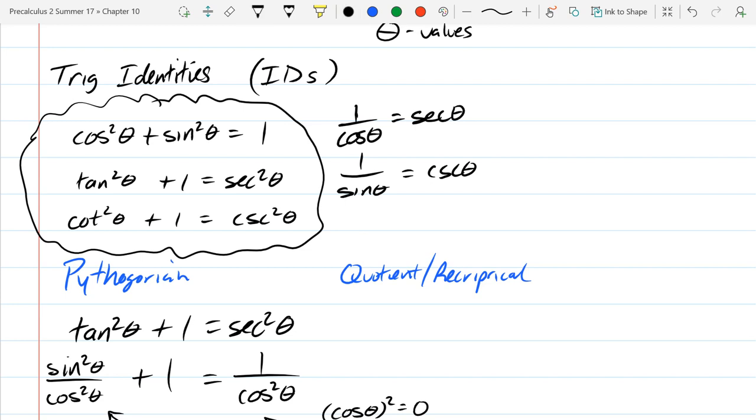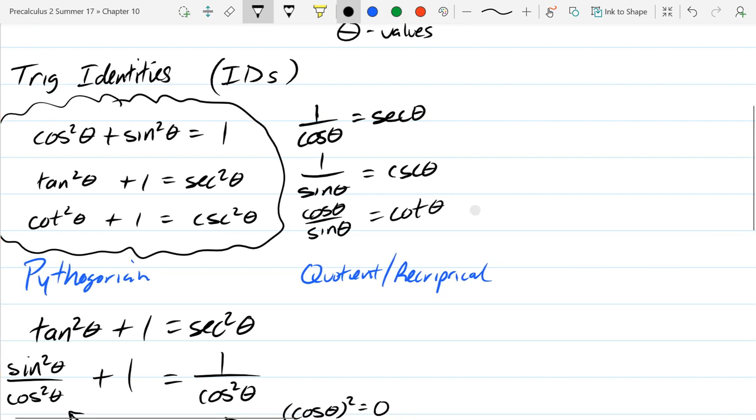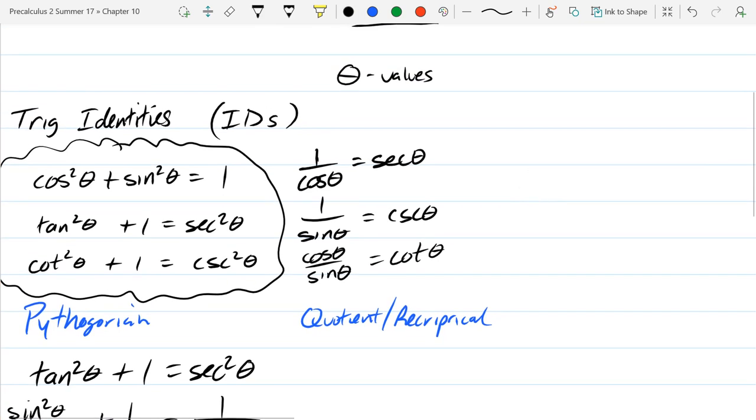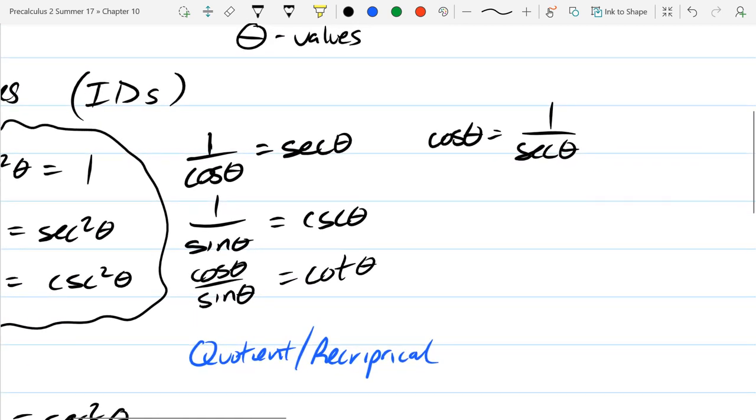Cosecant, and one over... So cosecant, cotangent, try to get that one in here. Next, cos over sine. Those are the quotient identities right there. The reciprocals, you can flip these around. I could write cos theta equals one over secant theta.